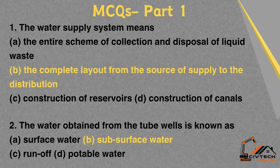MCQ 1: The water supply system means — A. The entire scheme of collection and disposal of liquid waste. B. The complete layout from the source of supply to the distribution. C. Construction of reservoirs. D. Construction of canals. Correct option: B. The complete layout from the source of supply to the distribution.